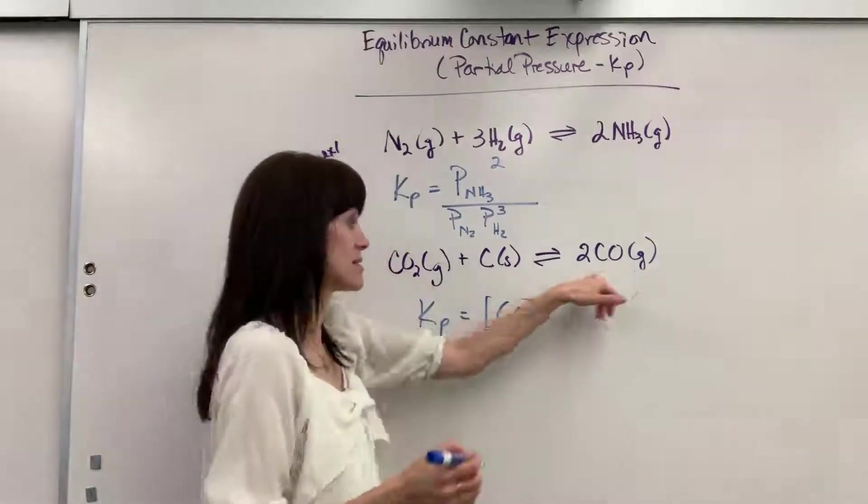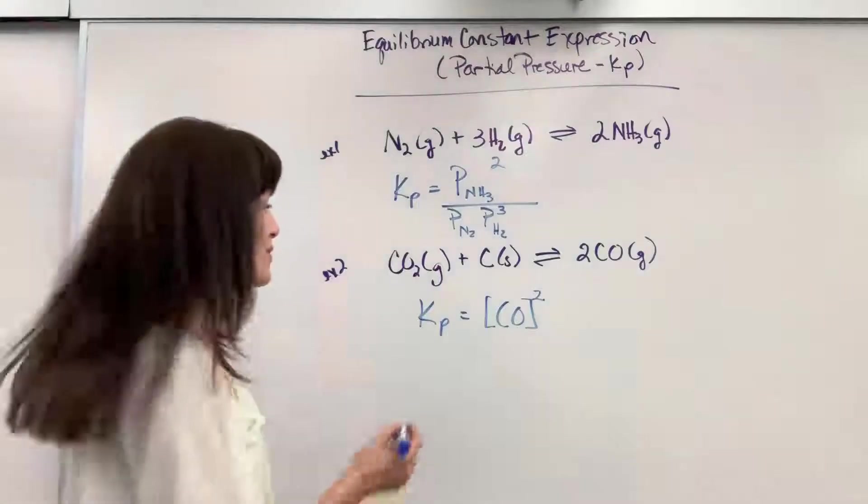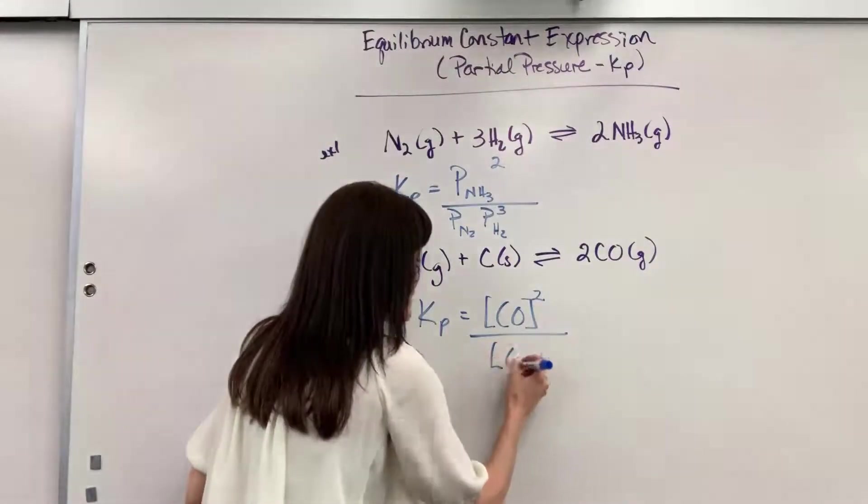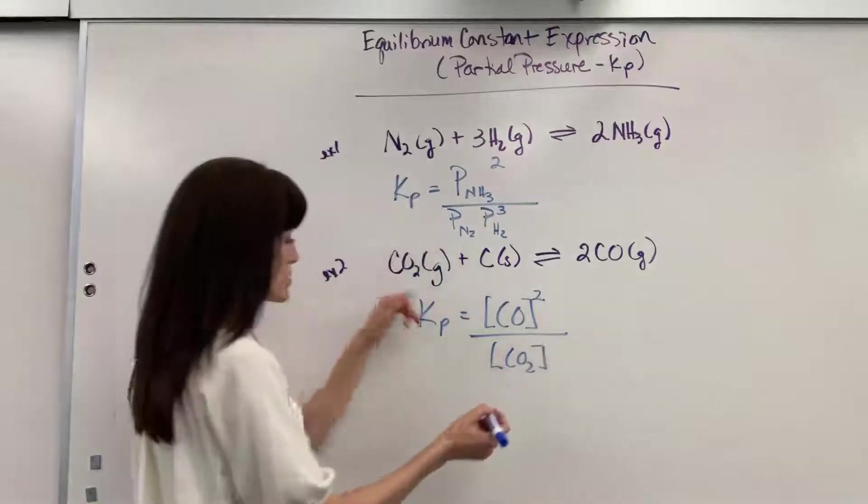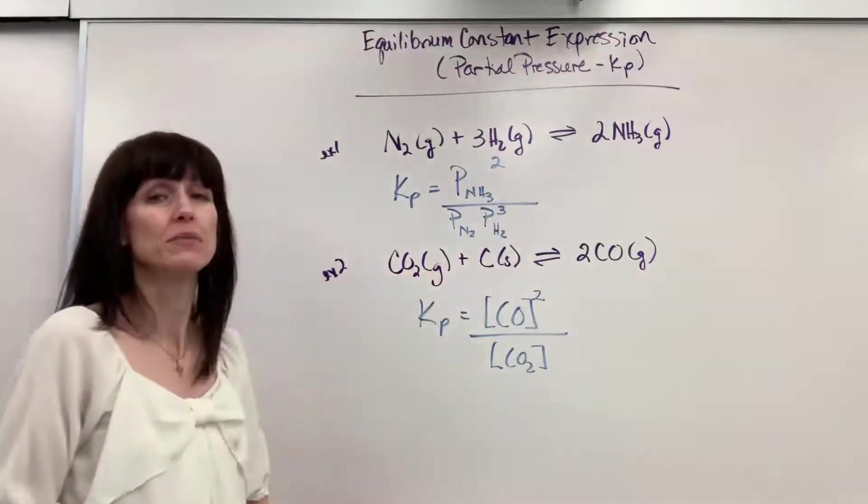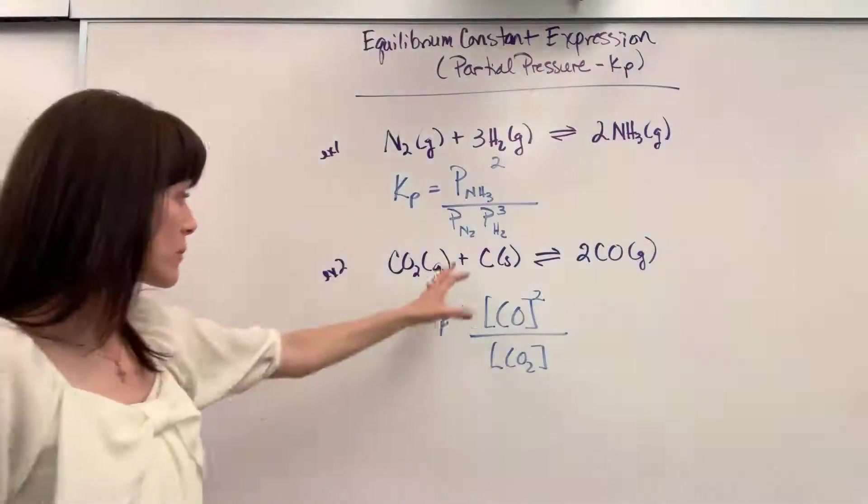We are going to have the equilibrium expression equals products. Notice that's a gas, and the exponent is 2 because the coefficient is 2, divided by, also a gas, carbon dioxide CO2, and that's understood to be a 1 exponent. And I don't even include that carbon because it's a solid. Remember, solids and liquids we never write down. And there we have it.